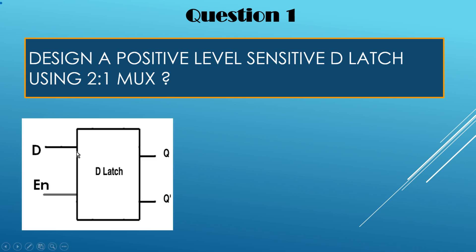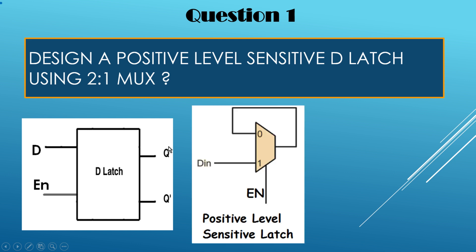Let me explain the functionality of a D latch. It has two inputs, D and Enable, and two outputs, Q and Q-bar. When Enable is high, whatever value is on input D is passed to Q. When Enable is 0, Q retains its previous value — the output Q is latched.